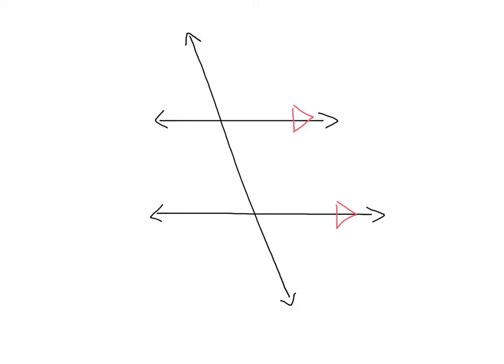I've gone ahead and drawn a pair of parallel lines in addition to this transversal that is transversing those lines. If you look a little closer, we'll notice that these parallel lines and this transversal form many angles. We've got an angle here, an angle here, here, here, here, here, here, and here. These angles are going to have various relationships that are going to be very useful to us.